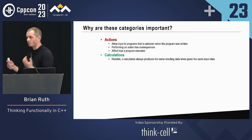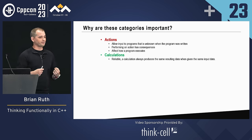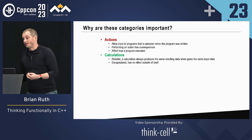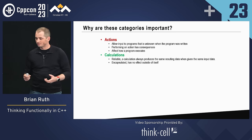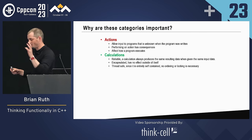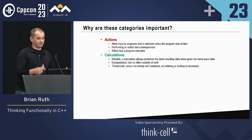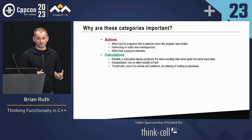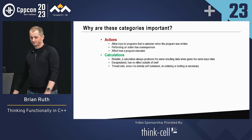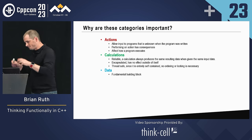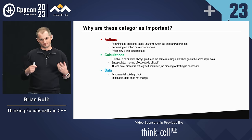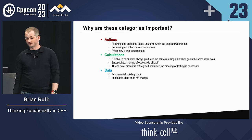Calculations are going to be reliable — you get the same value every single time you put the same thing in. They're encapsulated, with no visible effects outside of themselves. They're inherently thread-safe depending on how they're used — because you get the same thing for the same inputs all the time, there's no ordering or memory locking necessary for pure calculations. Data is going to be our fundamental building block — immutable, not going to change — it records the results of these actions and calculations and is transparent.